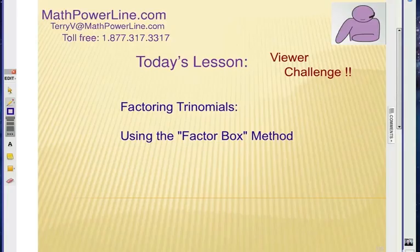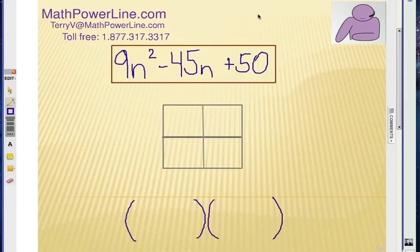This is the second video in the series about factoring trinomials using the factor box method. This is a viewer challenge. A viewer of some of my videos on factoring wanted more examples about how to use this method. So, here we go. The example here is 9n squared minus 45n plus 50.